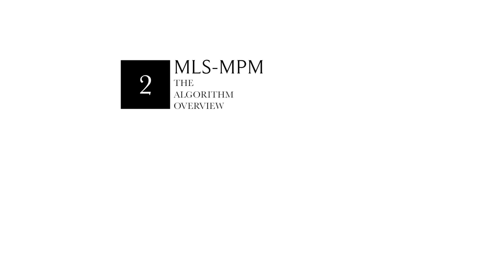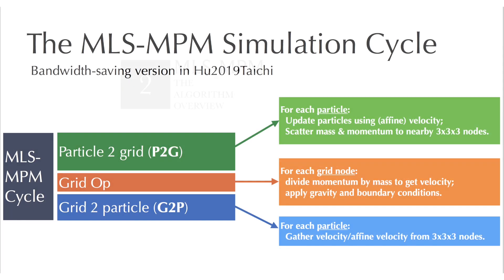Our solution to the problem is to use Lagrangian particles to store most of the information and use the Eulerian grid to perform grid operations. First, we perform particle-to-grid transfer. We then perform pressure projection on the grid. And finally, we transfer back to particles and perform particle operations accordingly.